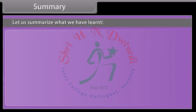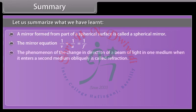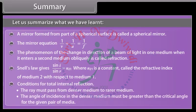Summary: a mirror formed from part of a spherical surface is called a spherical mirror. The mirror equation is 1/v + 1/u = 1/f. The phenomenon of change in direction of a beam of light when it enters a second medium obliquely is called refraction. Snell's law: sin i / sin r = N21. Conditions for total internal reflection: the ray must pass from a denser medium to a rarer medium, and the angle of incidence in the denser medium must be greater than the critical angle for the given pair of media.